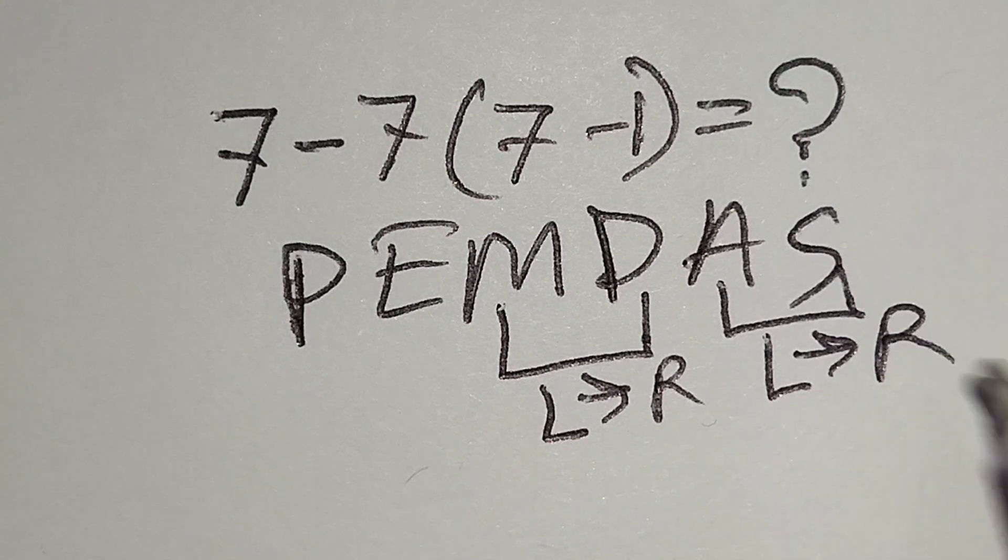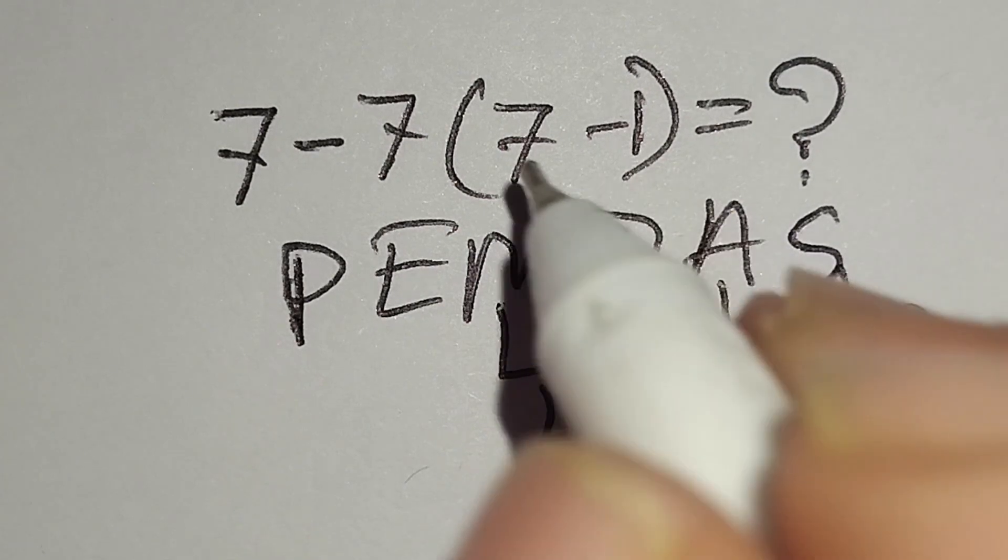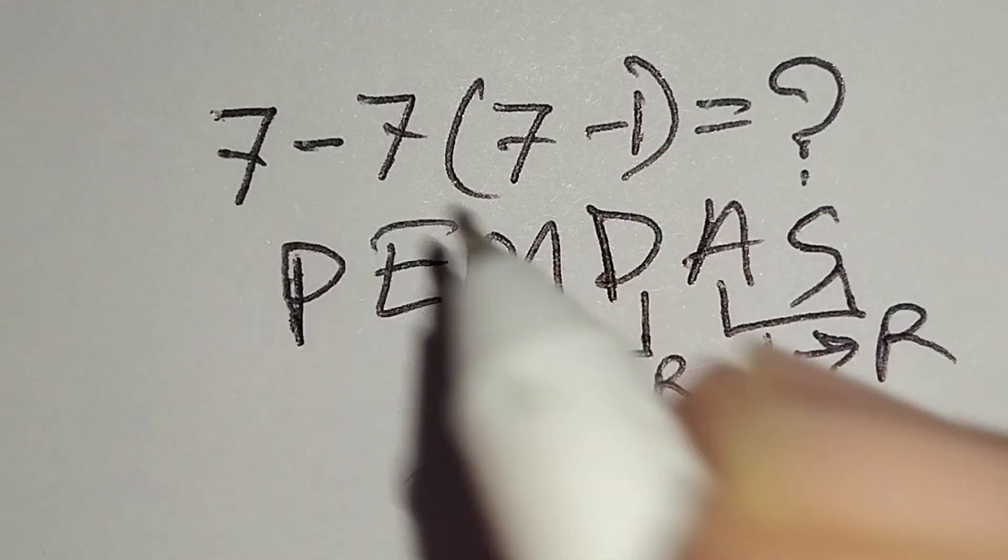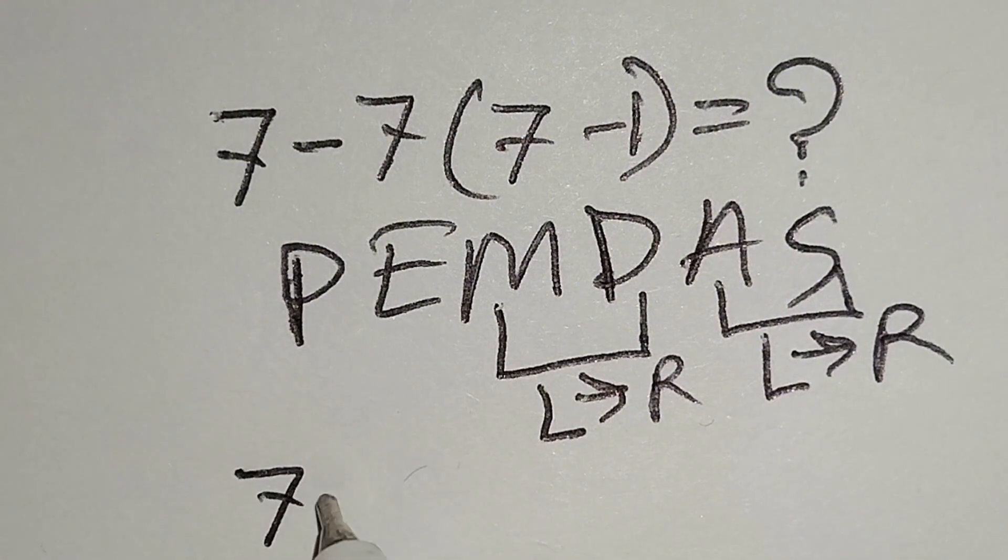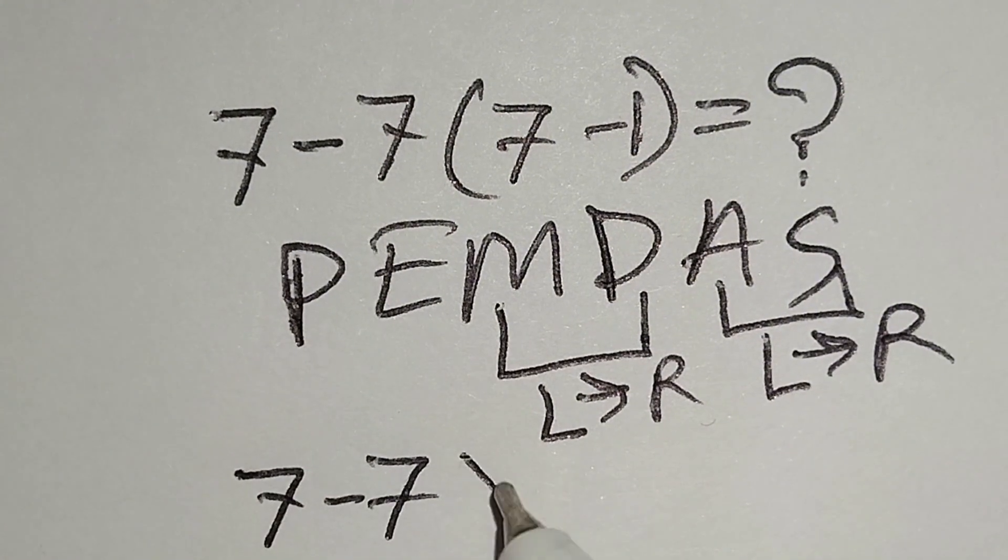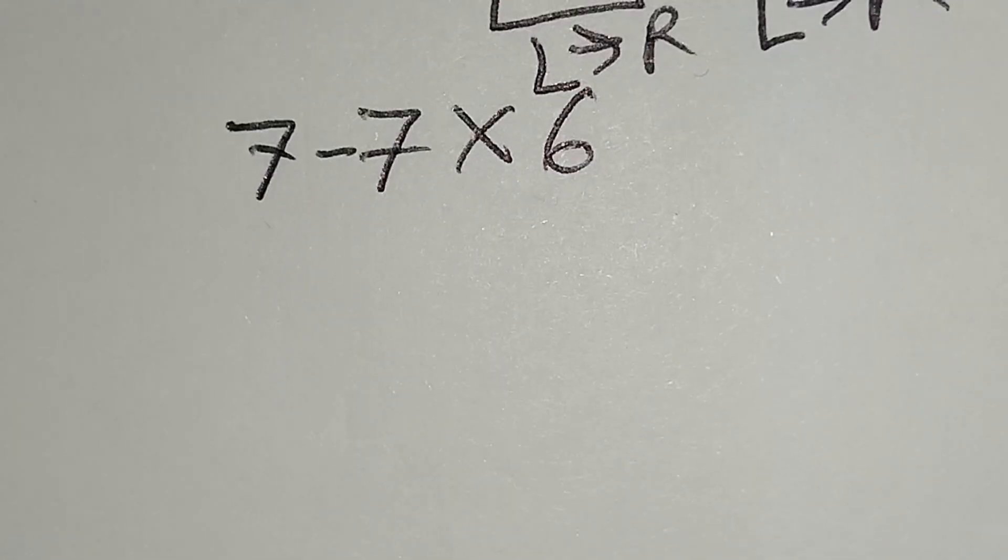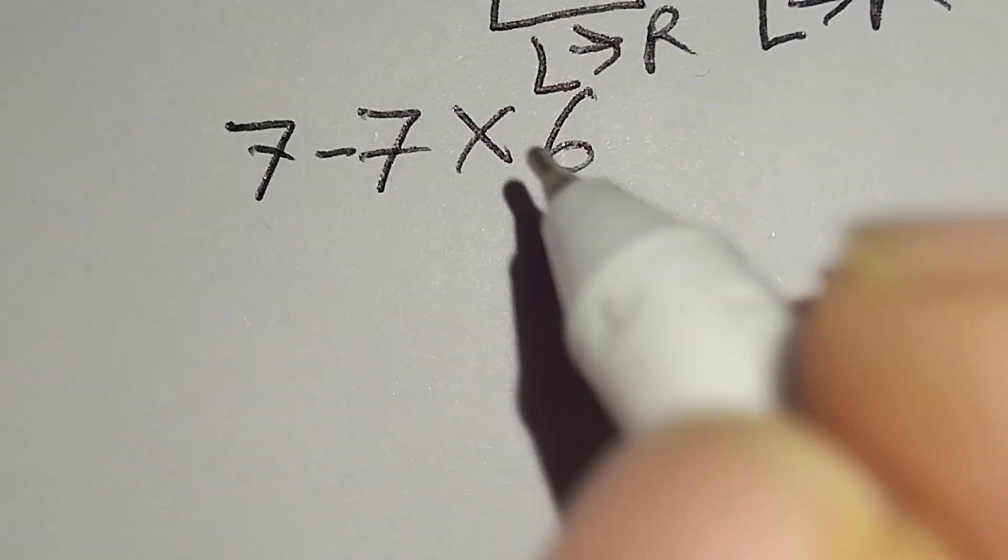Therefore, at first we have to work with this parenthesis. Here 7 minus 7 multiply 7 minus 1 gives us 6. Now I have to work with this multiplication.